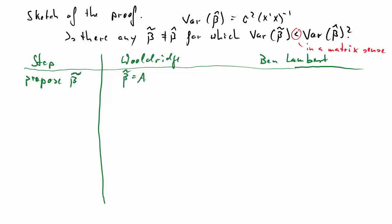First, we propose an alternative estimator beta tilde. Wooldridge proposes that to be a times y. And perhaps let's compare that to the OLS-estimator beta hat again, which is here. So, the a takes the role of the x'x inverse x', but it's going to be different than that. And Ben Lambert proposes beta tilde to be beta hat plus something else. So, plus d times y. So, these are the two proposed alternative estimators.